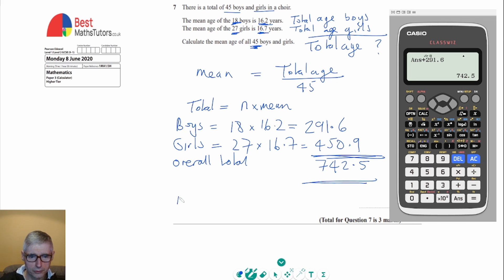So now the mean, the overall mean, is going to be 742.5 divided by 45. So I'm just going to use the figure I've already got on the calculator there, divided by 45.